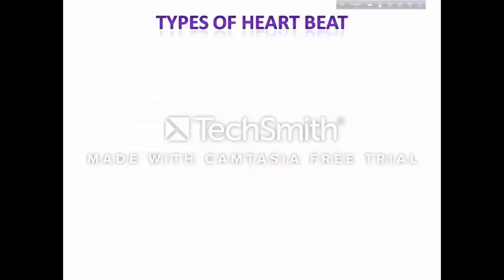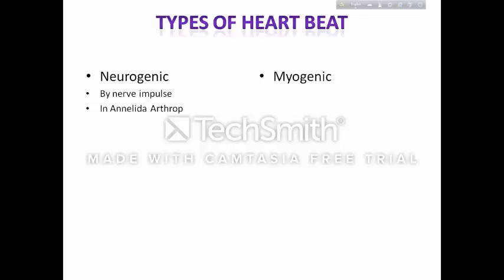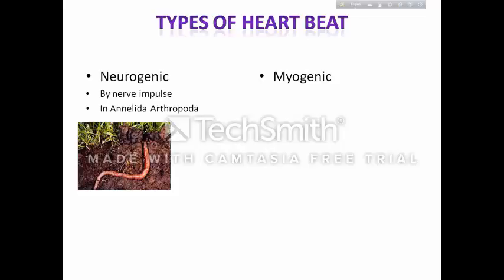Heartbeat is of two types: neurogenic and myogenic. Neurogenic heartbeat is initiated by nerve impulse. It is mainly found in some annelids and most arthropods — annelids like earthworm, and arthropods like cockroach, scorpion, etc.